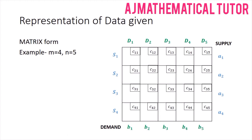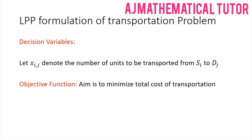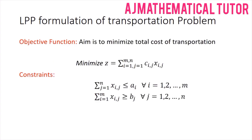Now let's connect this with the linear programming formulation. Define the decision variables: let xij denote the number of units to be transported from each source to each destination. Since cij is the cost of transportation per unit, multiplying cij by xij gives the total cost. The objective function is: minimize Z equals the summation of cij times xij over all i and j.